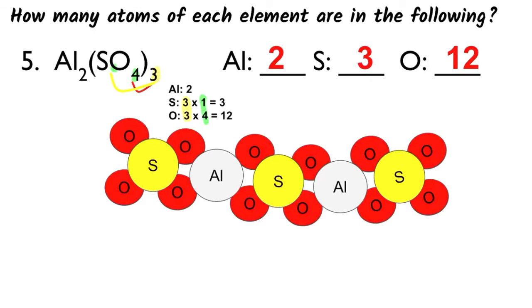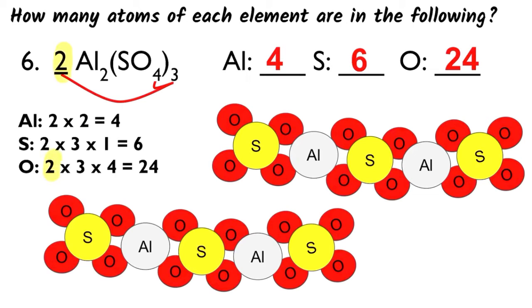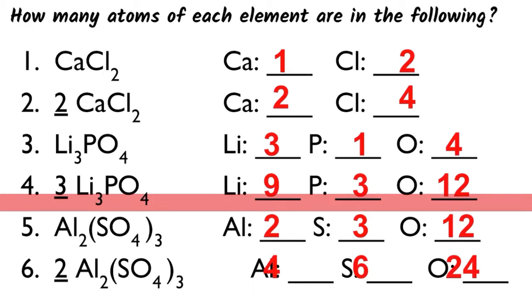Now, this last question is just throwing another variable in here because we're using the same formula that we had in number five, but now we have a coefficient of two. So I have to multiply everything that I had when I counted just one of the particle by two. The coefficient times the subscript, two times two for aluminum. But when I've got the parentheses and the polyatomic ion, I need to multiply the coefficient times the subscript outside of the parentheses times the subscript inside the parentheses. So two times three times four for oxygen gives me 24, two times three times one for sulfur gives me six. One through four were much simpler than five and six here. Five and six are a little more challenge problems because they include those parentheses, but it is worth making sure that you are comfortable with how I just counted those atoms.